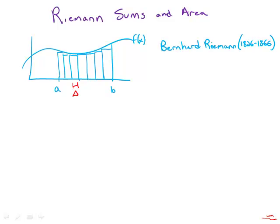These rectangles have a thickness of delta x, and then we have a bunch of x-coordinates associated with them. We'll take the x-coordinate at the left side of each rectangle. So we get x1, x2, x3, and so on all the way up to xn. Here x1 equals a, x2 equals a plus delta x, x3 equals a plus 2 delta x, and so forth.